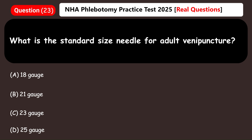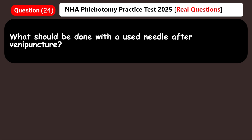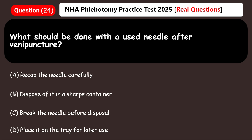What is the standard size needle for adult venipuncture? A) 18 gauge, B) 21 gauge, C) 23 gauge, D) 25 gauge. Answer: B) 21 gauge. What should be done with a used needle after venipuncture? A) Recap the needle carefully, B) Dispose of it in a sharps container, C) Break the needle before disposal, D) Place it on the tray for later use. Answer: B) Dispose of it in a sharps container.